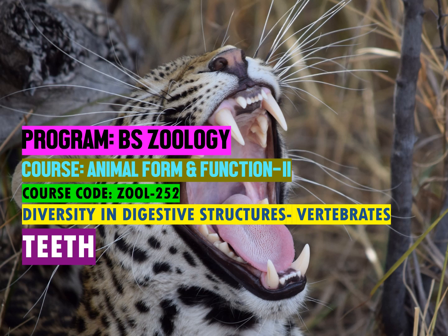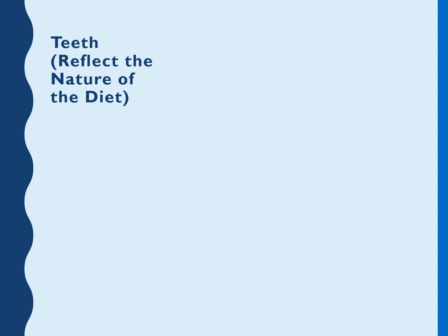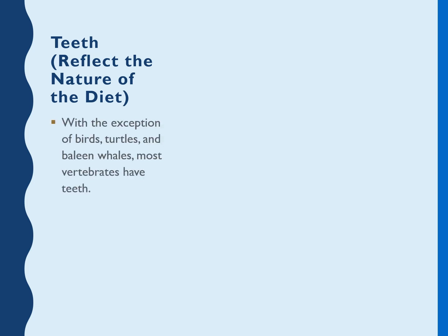Welcome students. In today's class we are going to focus on teeth found in different vertebrates. Teeth reflect the nature of the diet. In the previous lecture we also discussed that oral cavity and other digestive tract structures like intestine and stomach tell us what an organism eats, how it eats, and how it digests. So teeth are one of those — they reflect the nature of the diet.